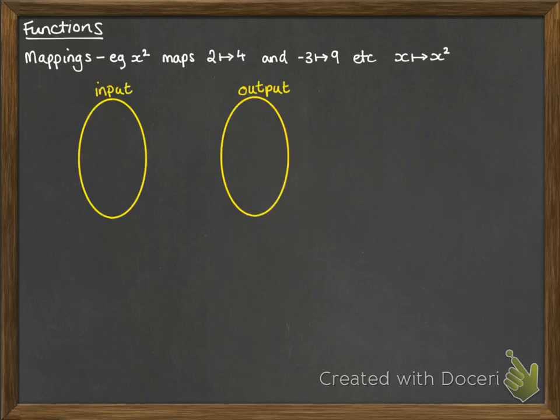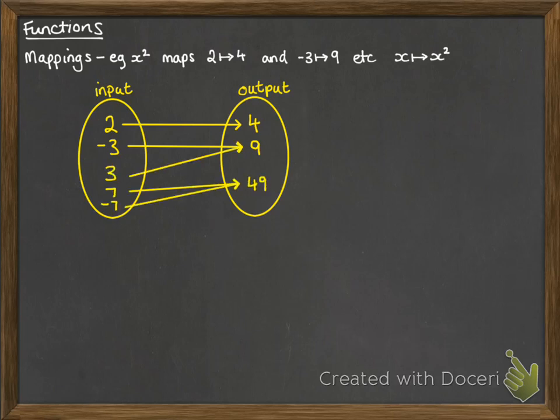We can think of this as having an input and an output to the mapping. So 2 gives us an input of 2 and an output of 4. If we put minus 3 in we get an output of 9. If we put 3 in we also get an output of 9. And 7 and minus 7 would also give us 49.